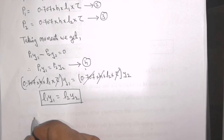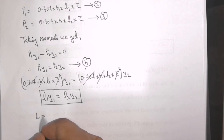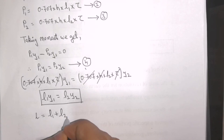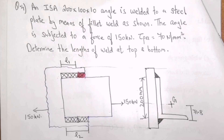Also, the total length of the weld is equal to L1 plus L2. Let us now solve a problem on axially loaded unsymmetrical welds.